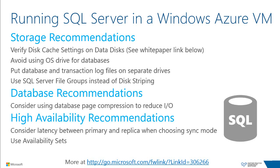If the workload is sensitive to latency and requires a low number of concurrent read IOs, consider enabling read cache on the data disk. It is also recommended to test enabling database page compression to reduce IO. Compressed tables and indexes mean more data is stored on fewer pages, requiring reading fewer pages from disk, which can improve performance of IO-intensive workloads.